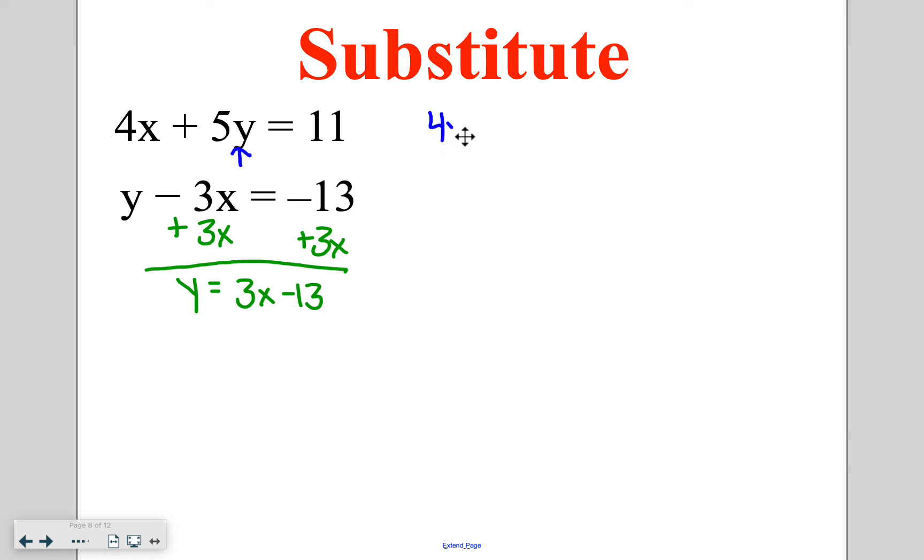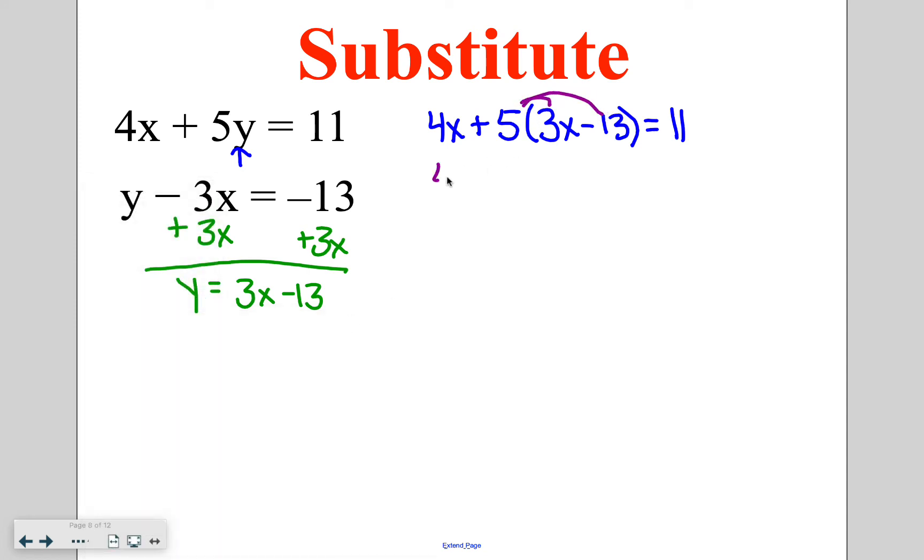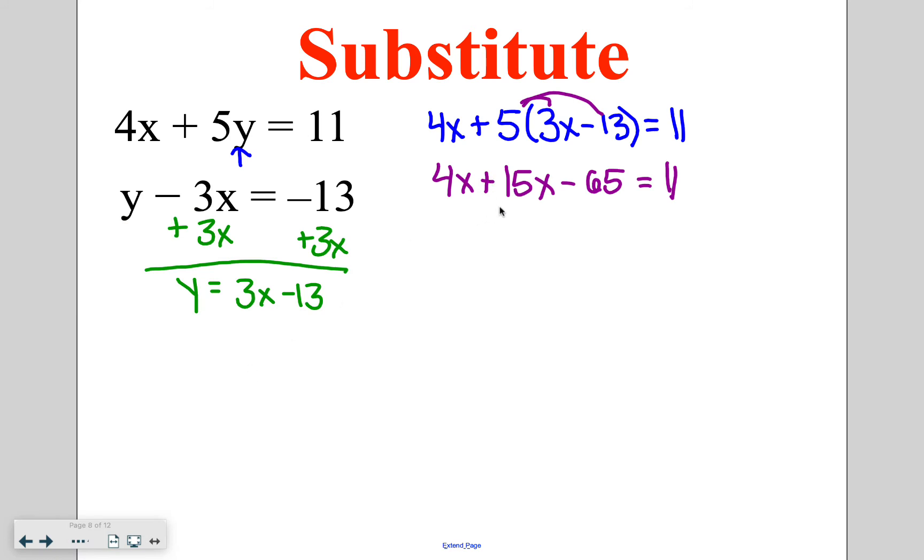So I'm going to say 4x, that's not getting substituted, plus 5, that coefficient doesn't go away. And then in the spot of y, I'm going to put 3x minus 13, and that's going to still equal 11. Now I need to distribute to get rid of those parentheses. So I've got 4x plus 15x minus, and then we do 5 times 13, which is going to give me 65 is equal to 11. Then I'm going to go ahead and combine my like terms. So I've got 4x plus 15x, which is 19x minus 65 is equal to 11.